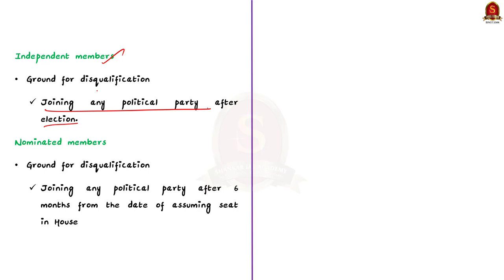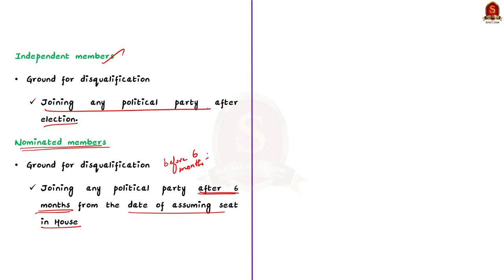Regarding nominated members: nominated members can be disqualified if they join any political party after the expiration of six months from the date on which they take their seat in the house. This means the nominated person may join any political party within six months of taking their seat. If they join after six months, they will be disqualified.